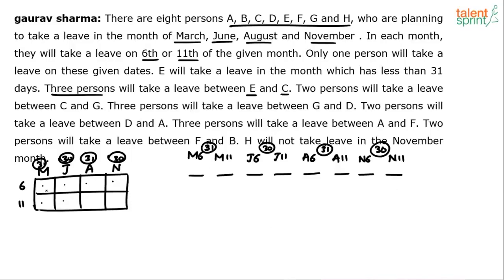When using rectangular grids, you have to be careful about direction. If there is a gap of three persons between E and C, you cannot go horizontally — you have to go vertically. So counting 1, 2, 3, C has to come in the correct cell going in the right direction.